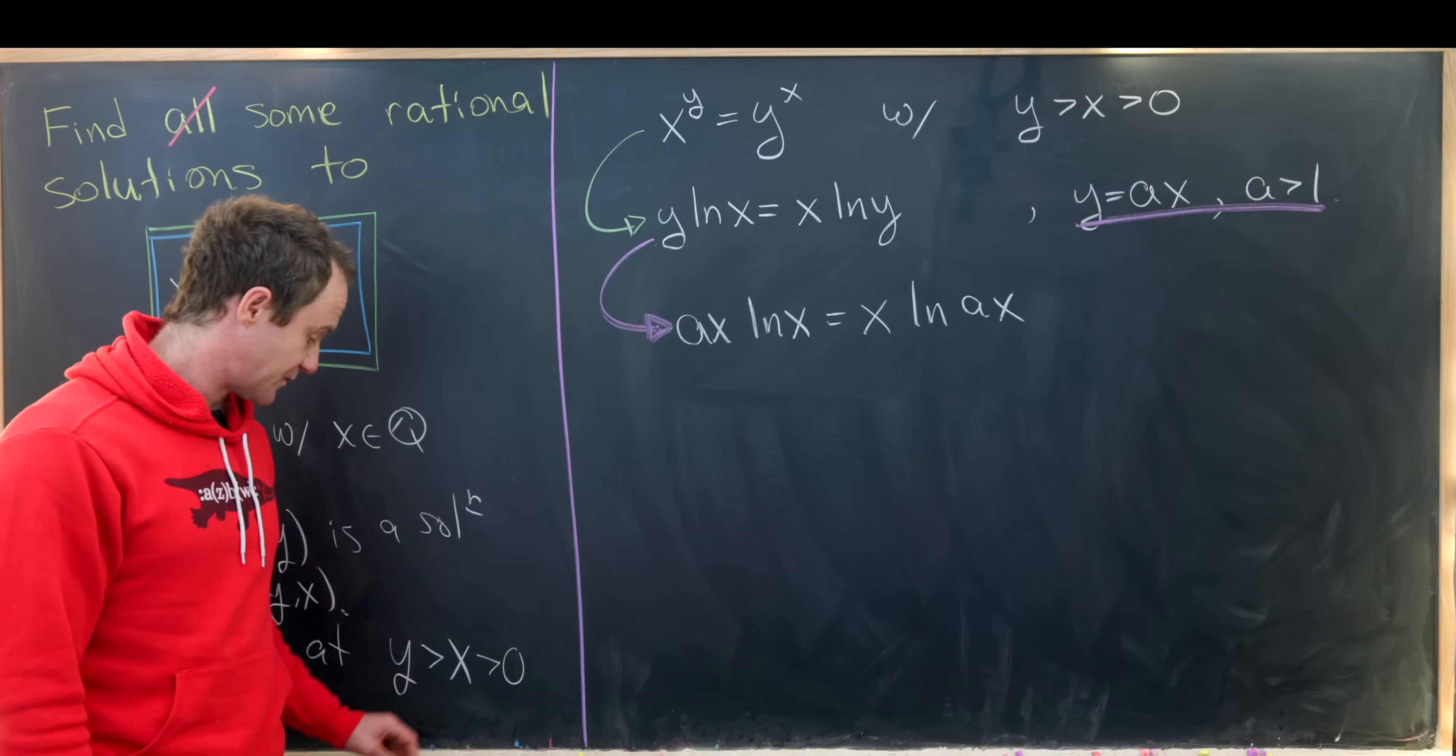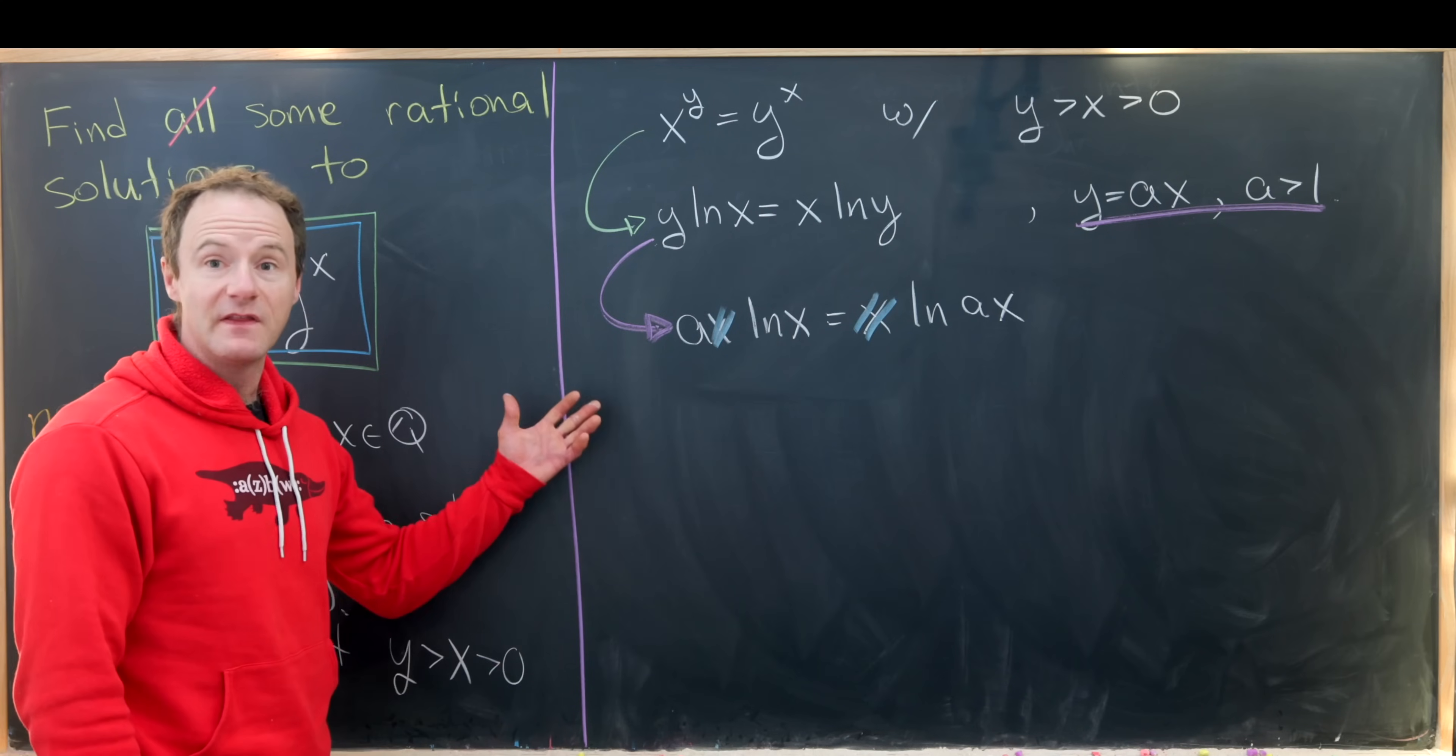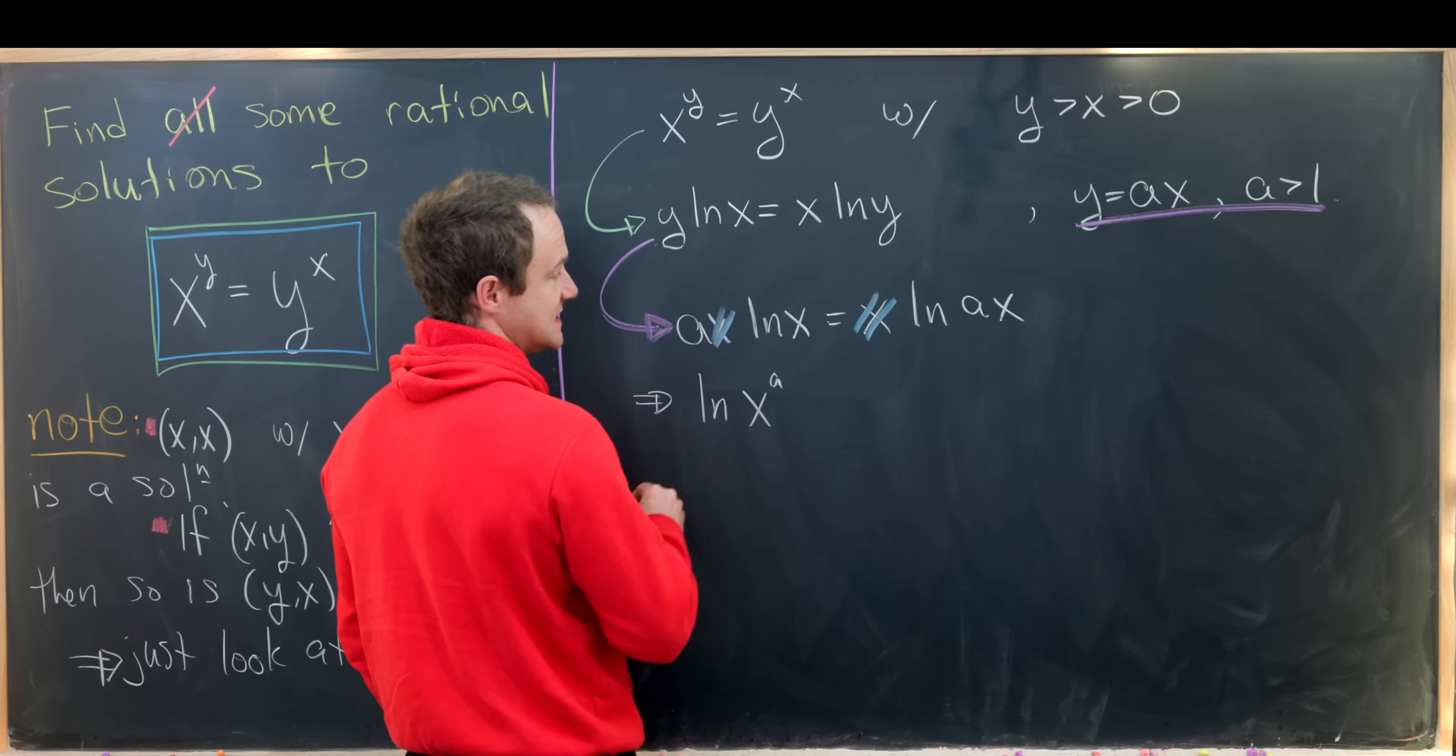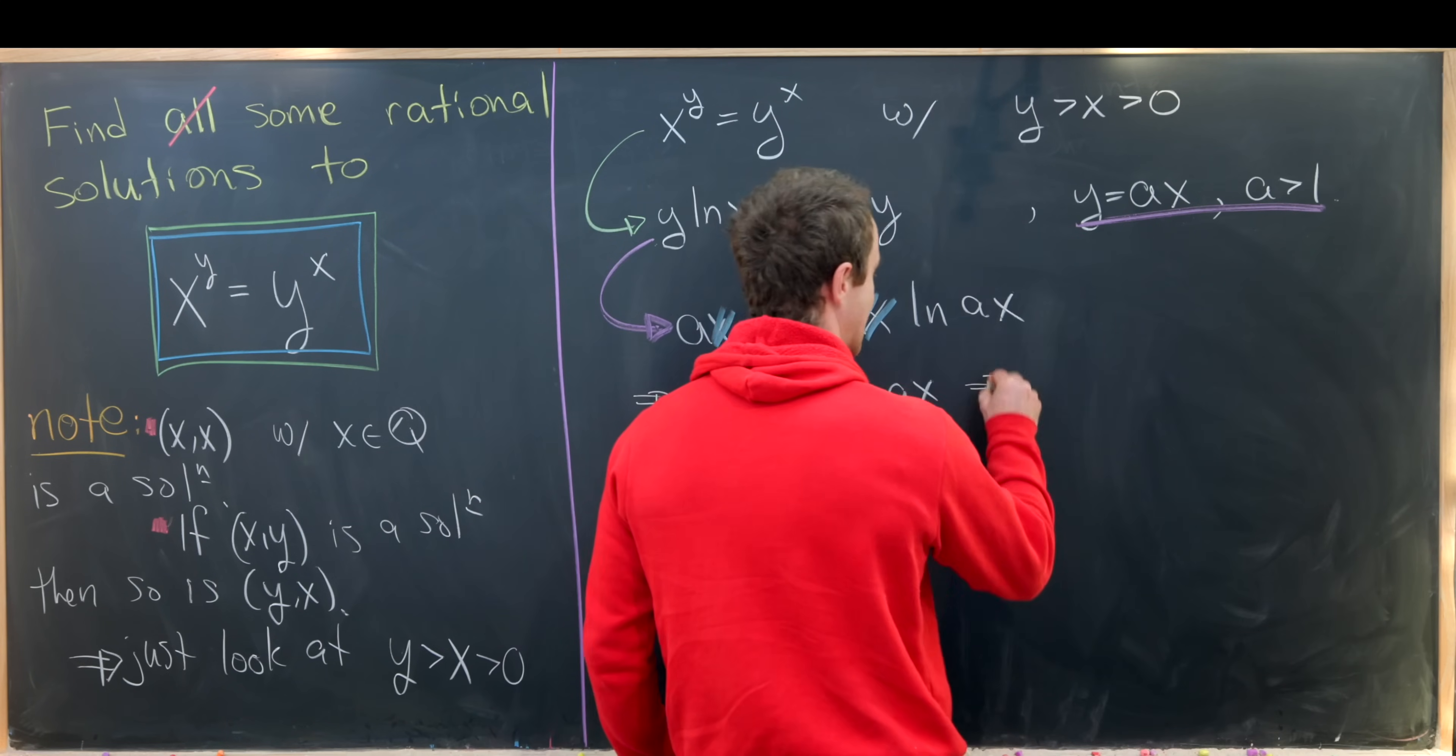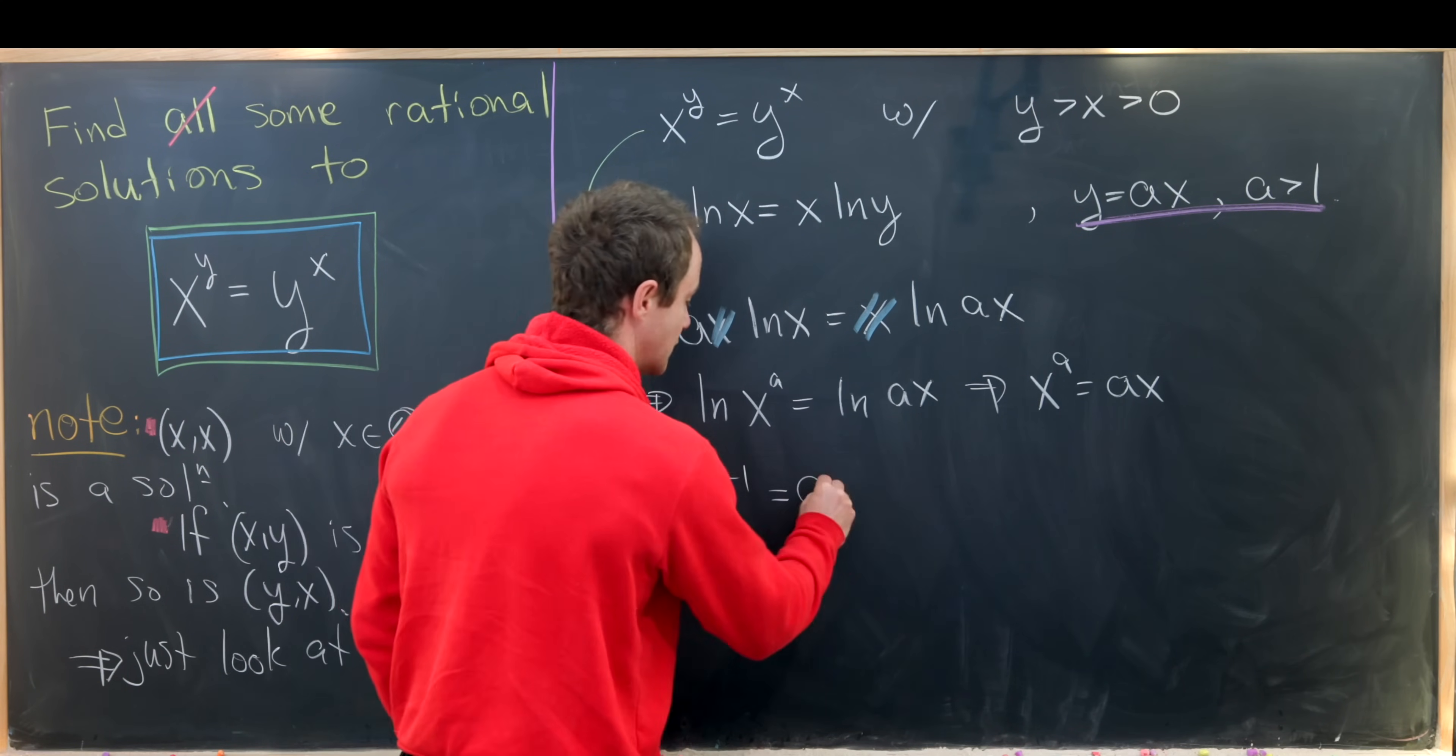So now let's notice that some stuff pretty easily cancels. So we have this x will cancel with this x. So that's good. And then we can use logarithm rules to bring this a inside. So that's going to give us the natural log of x to the a equals the natural log of ax. Then from here, since the natural log is a one-to-one function, that tells us that x to the a is the same thing as a times x. In other words, x to the a minus one is equal to a.